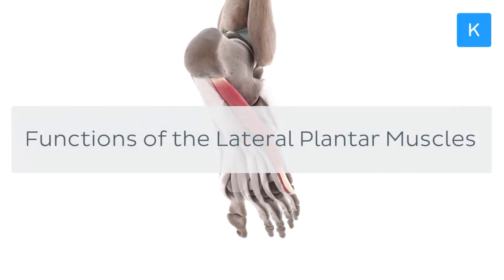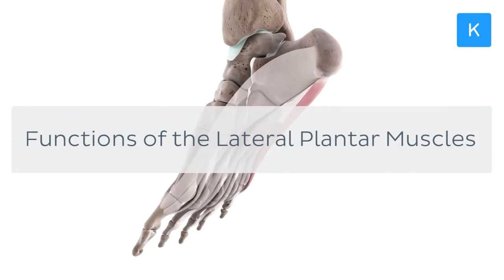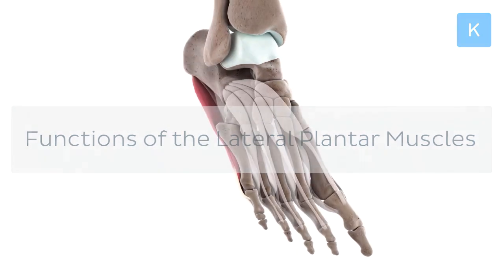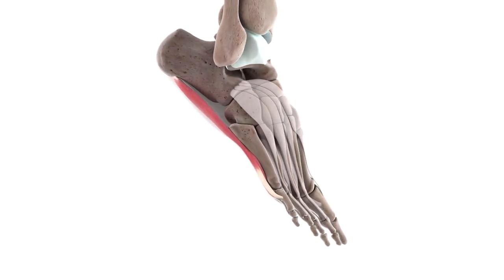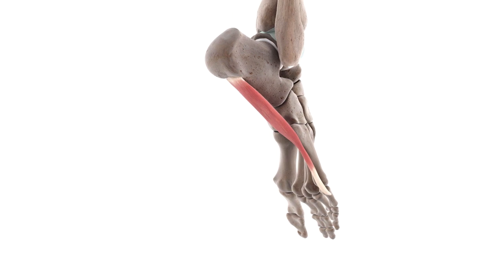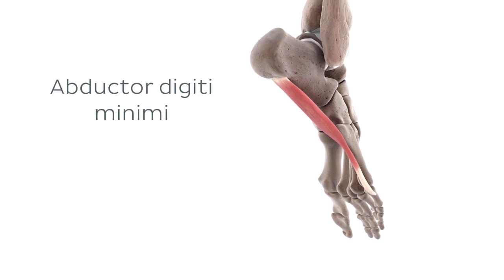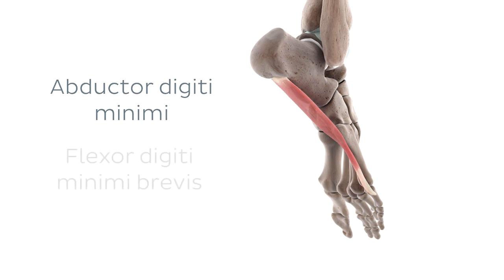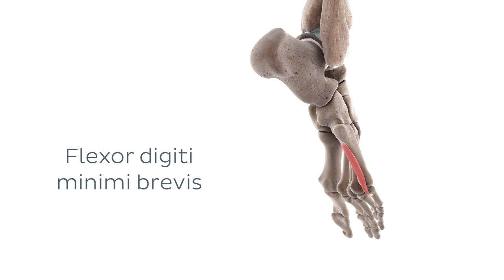Welcome to our video tutorial on the functions of the lateral plantar muscles of the foot in 3D. In today's tutorial we're going to be exploring the functions of two small muscles of the foot: the abductor digiti minimi muscle, a long superficial muscle along the lateral border of the foot, and the flexor digiti minimi brevis muscle, a smaller deeper muscle also located along the lateral aspect of the plantar surface of the foot.